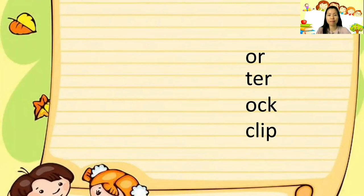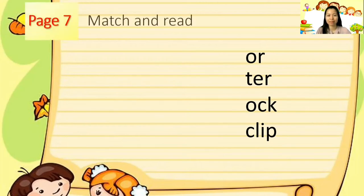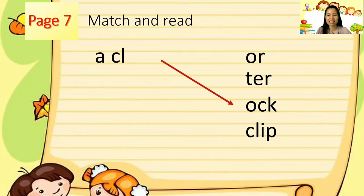Now let's try to match the set of letters to other letters to make the word complete and have a meaningful word. Let's try. Match and read. Yes, it's a clock. We need the O-C-K to complete and have the meaning of the word clock. A clock.